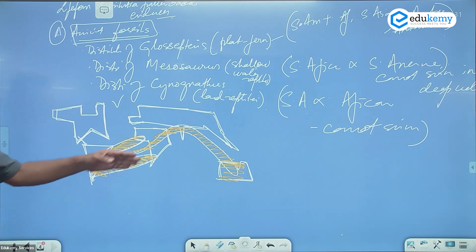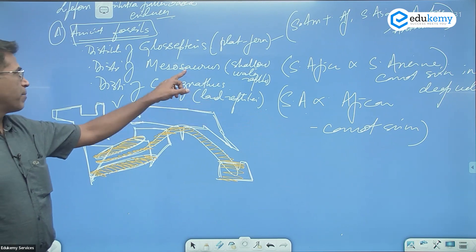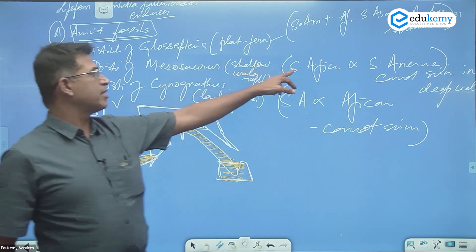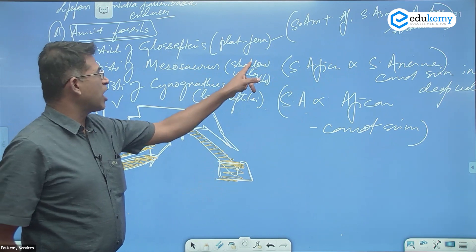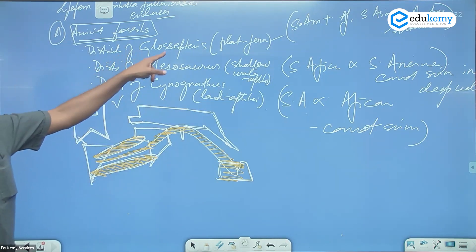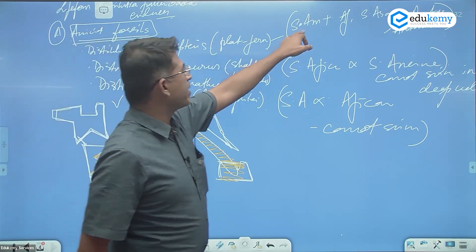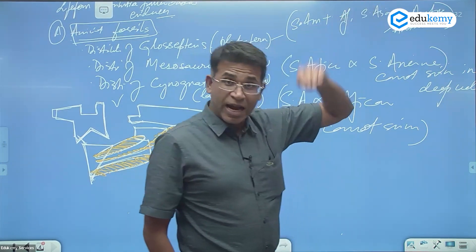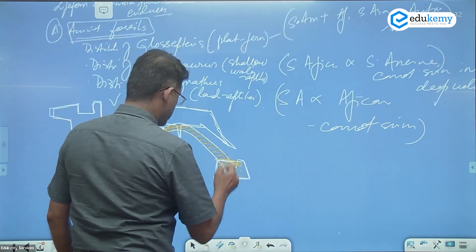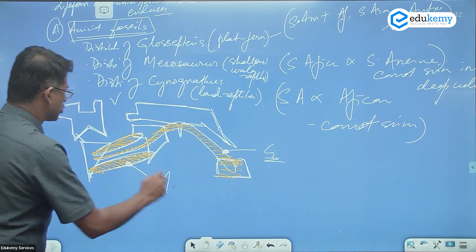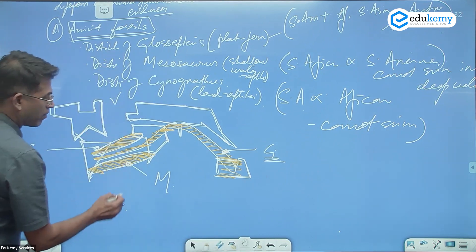Cynognathus is a land reptile found in South Africa and South America — it cannot swim. Mesosaurus is a shallow water reptile found in southern Africa and South America — it cannot swim in deep waters. Glossopteris is a plant-like organism found in South America, Africa, South Asia, Madagascar, Australia, and Antarctica.